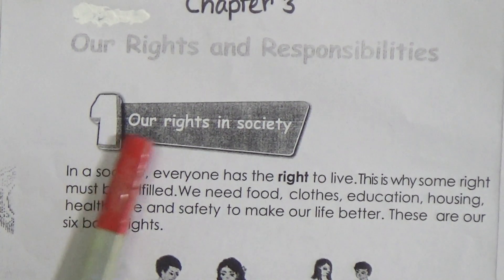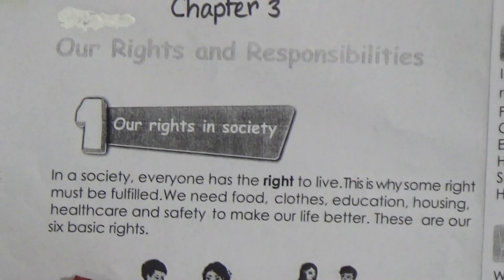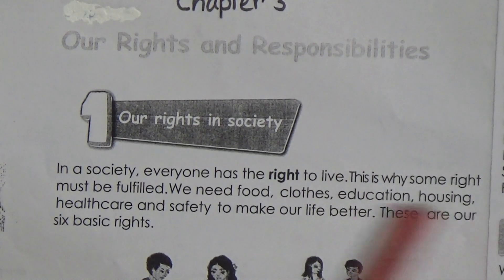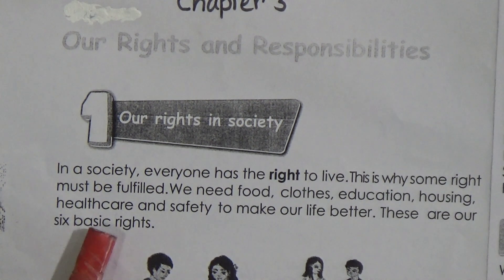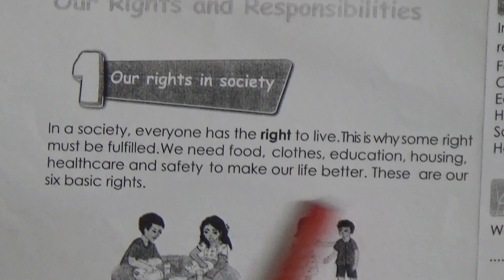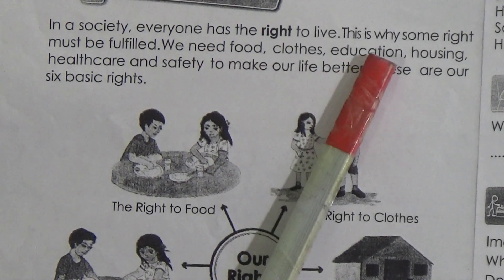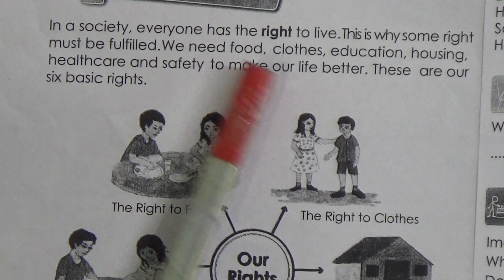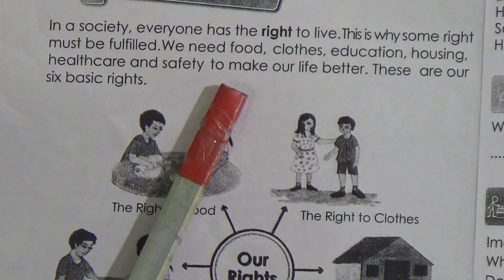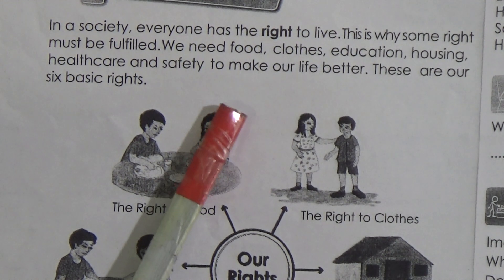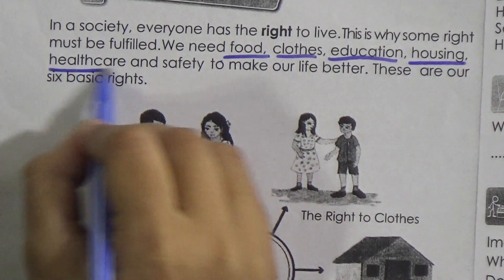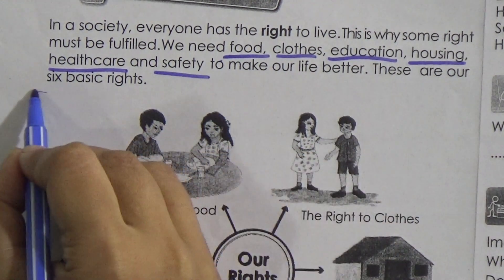Chapter 3: Our Rights and Responsibilities. The first lesson is 'Our Rights in Society.' What is our right in a society? Everyone has the right to live, and this is why some rights must be fulfilled. We need food, clothes, education, housing, healthcare, and safety to make our life better. In total there are six rights, and these are called our six basic rights.